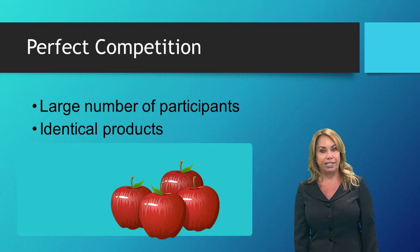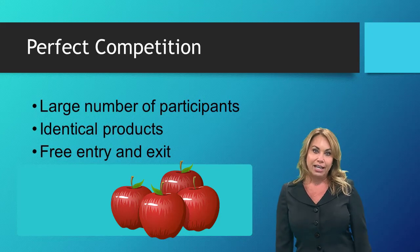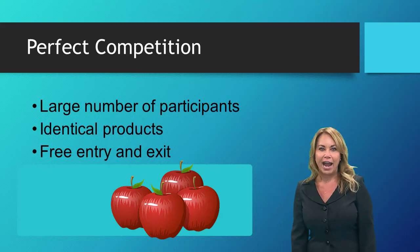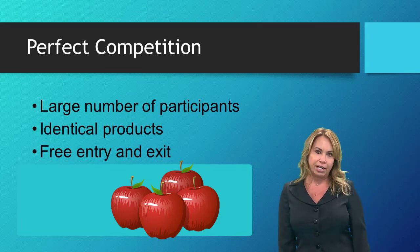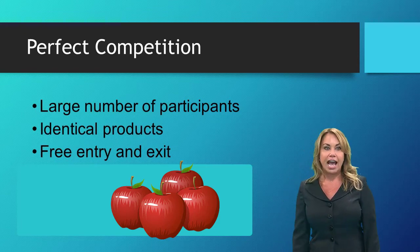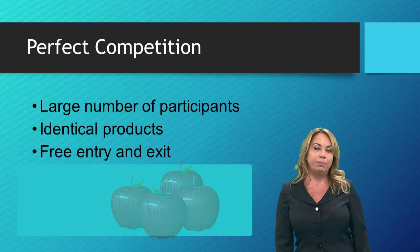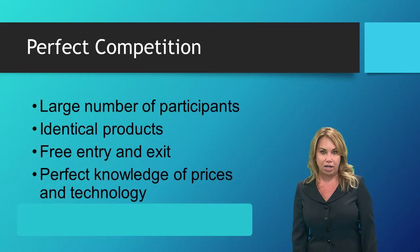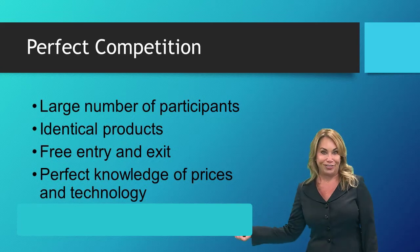Another characteristic of perfect competition is free entry and exit into the market. Going back to our apple example: if you just happen to have a Granny Smith apple tree growing in your yard and I do as well, then there is no difficulty for us to enter the apple market. Also, another characteristic is perfect knowledge of prices and technology — meaning I don't have any super secret trade secrets compared to the farmer down the street.